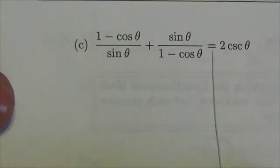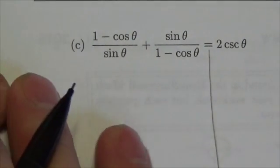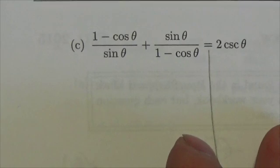Okay, now, do I see any Pythagorean identities? No, nada. But is there any obvious algebra that I can do? And the answer is yes.